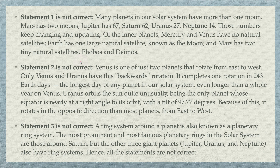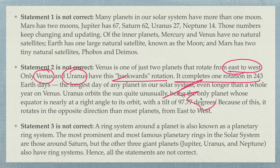Statement two is not correct. Venus is one of just two planets that rotate from east to west. Most planets rotate from west to east, but Venus and Uranus rotate from east to west. So if you were on Venus, sunrise would be in the west and sunset in the east — the opposite of Earth. On Earth we rotate west to east, which is why sunrise is in the east and sunset in the west.